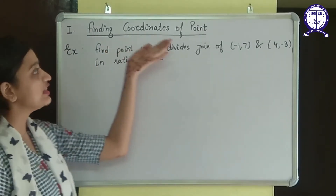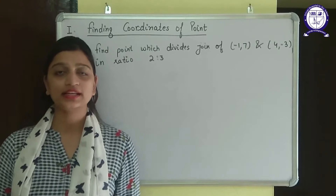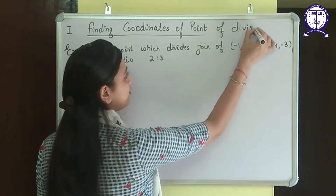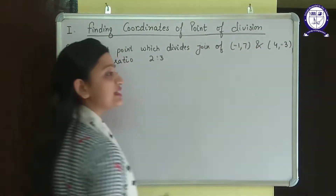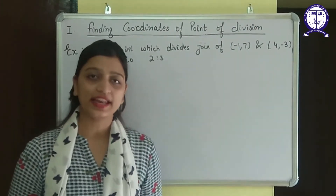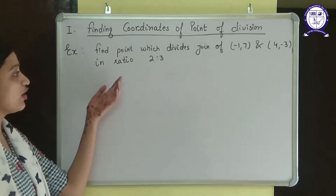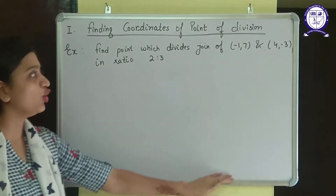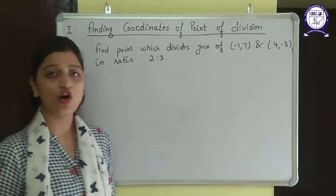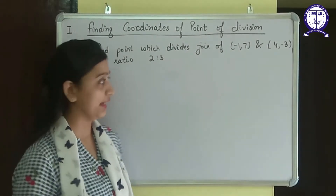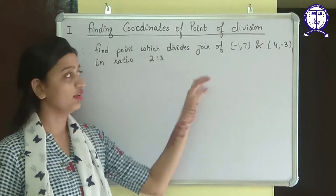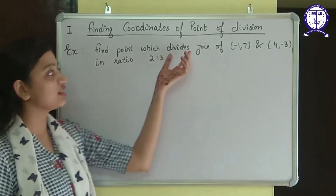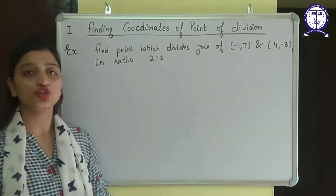The first type is finding the coordinates of the point of division. This is the simplest and most direct question in this exercise. For example: find the point which divides the join of (-1, 7) and (4, -3) in the ratio 2 is to 3. Always try to understand what the question is saying — we need to find the dividing point.